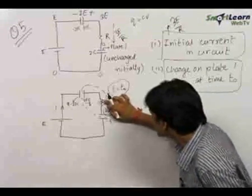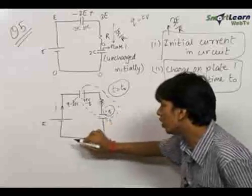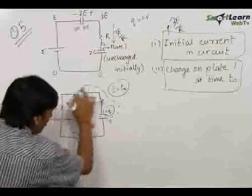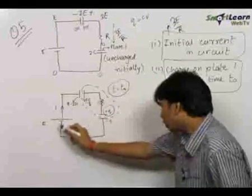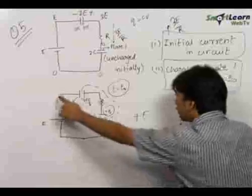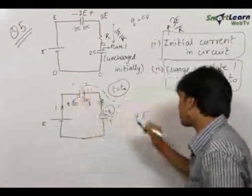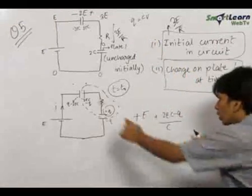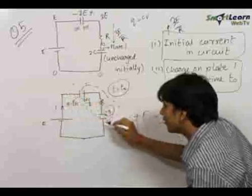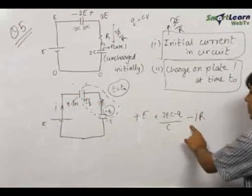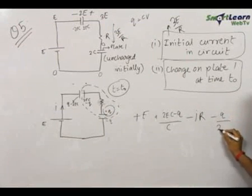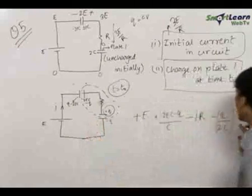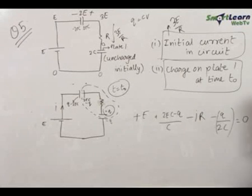To write an equation we apply Kirchhoff's Voltage Law in this loop: the total potential increase equals the total potential drop in one complete loop. Starting from this point and returning to it: going across the battery gives a rise of E; the next element gives a rise of (2EC − q)/C; assuming current i in this direction, crossing the resistor gives a drop of −iR; and crossing the 2C capacitor gives a potential drop of −q/2C, since the capacitance is 2C. Setting the sum equal to zero gives us an equation in i and q.